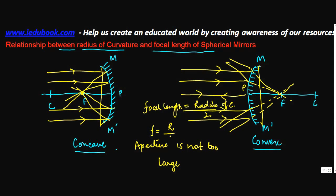Or f is equal to r upon 2, where r is basically your radius of curvature and f is the focal length. So let's say if the focal length is equal to 10 cm, then the radius of curvature is equal to 20 cm.